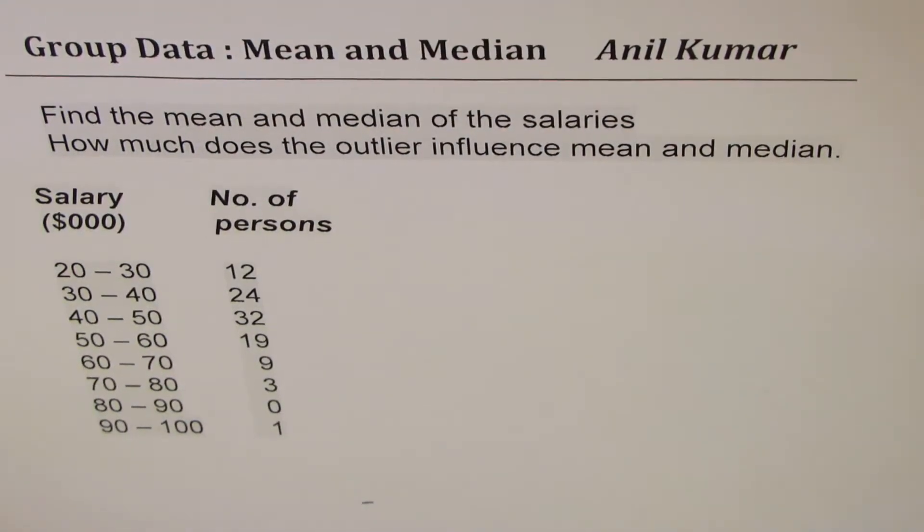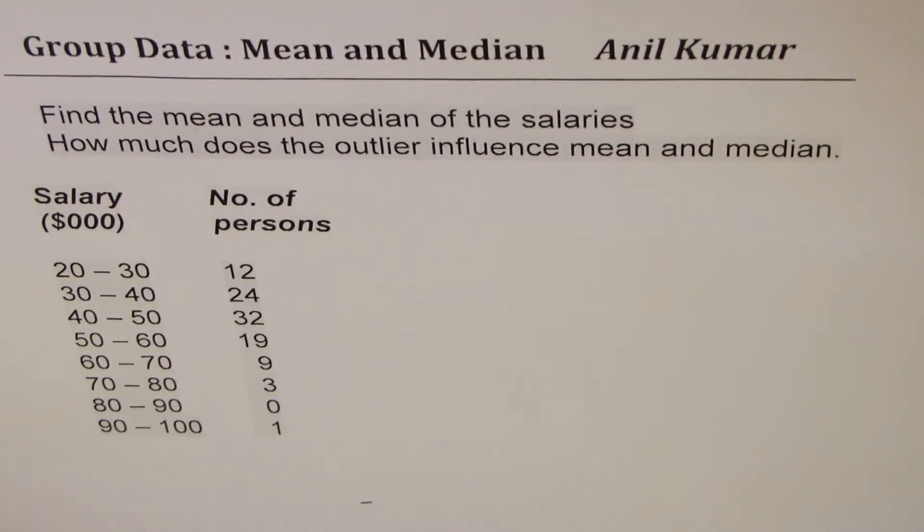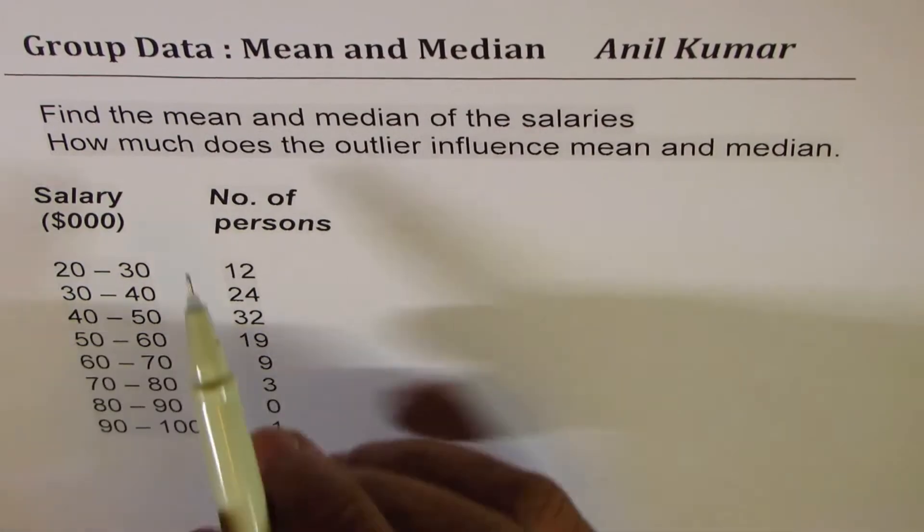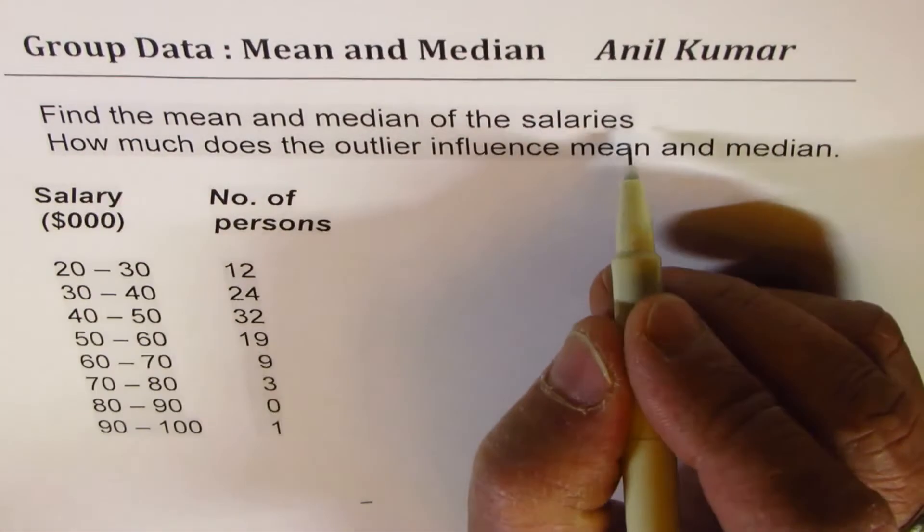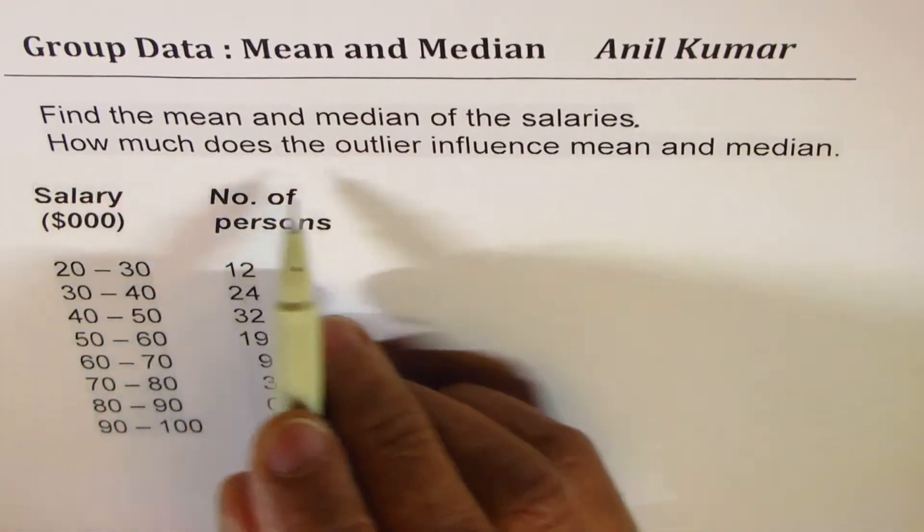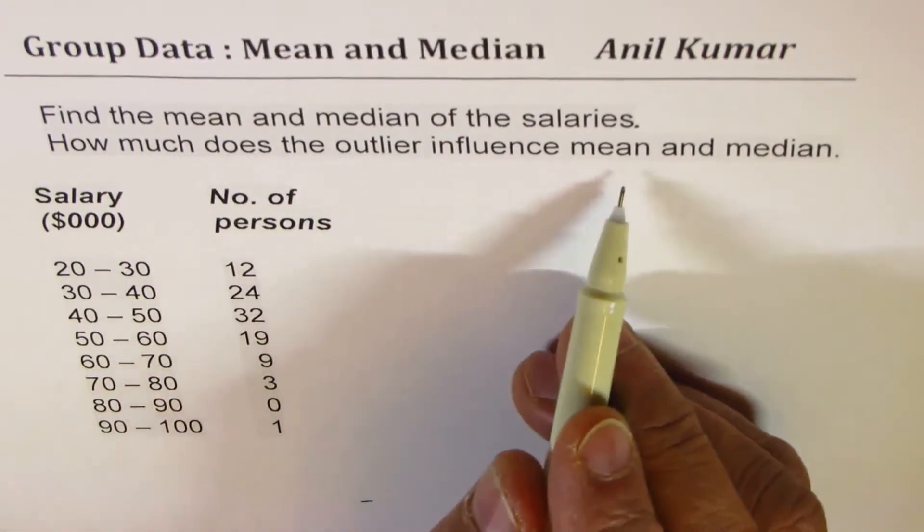I'm Anil Kumar, sharing with you a test question on finding mean and median from grouped data. The question here is: find the mean and median of the salaries. How much does outliers influence mean and median?